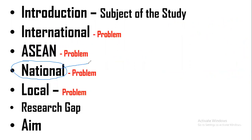For the national section, you have to select any news, RRL, or study about a specific place in your country that is not specifically in your own city. For example, if you are in Tagum City, you can find problems in Pampanga, Pasay, or Muntinlupa. But if something is specifically found in Tagum City, that goes in the local area part of your background of the study.